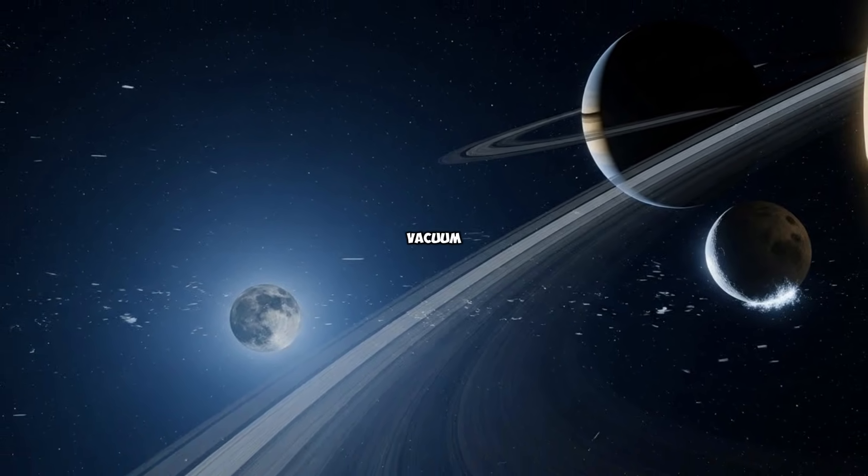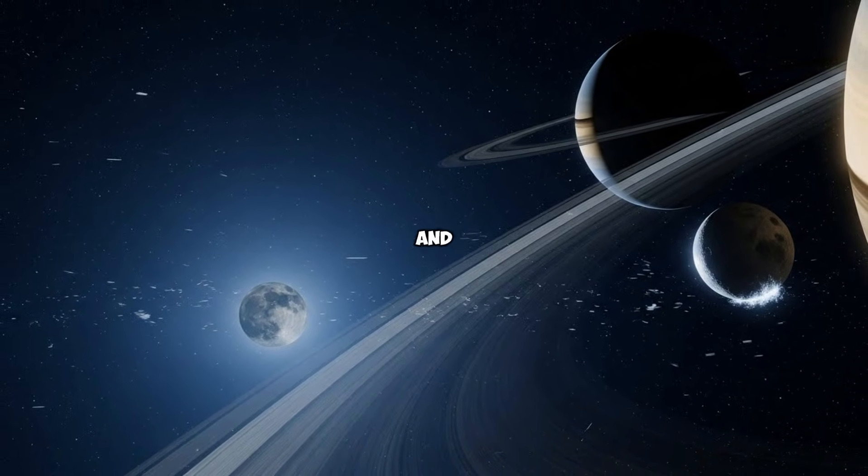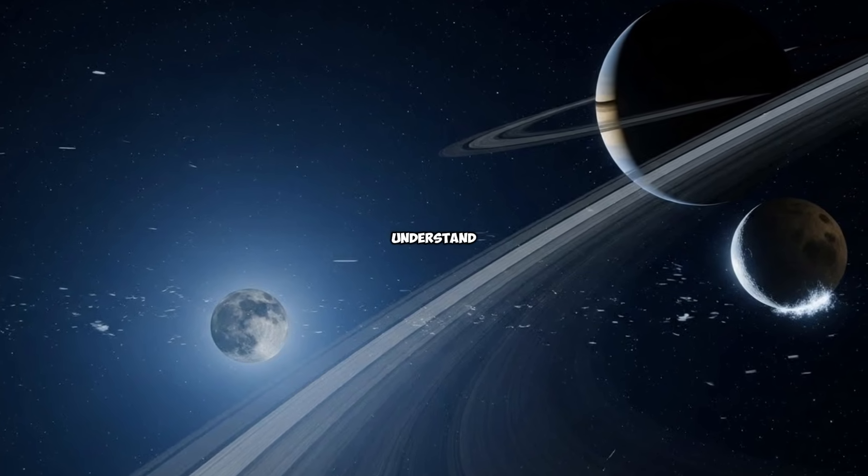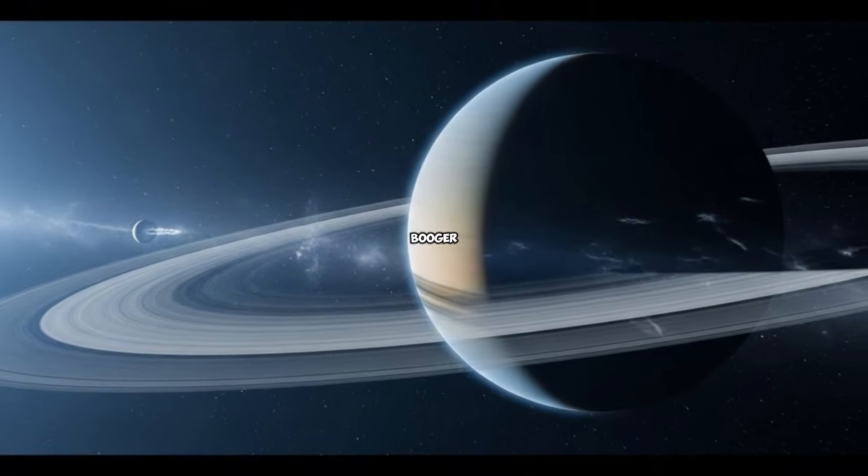What if I told you that somewhere in the cold vacuum between Saturn's rings and its moon Enceladus, there's an object we've been watching for seven months, and we still don't understand what it is.